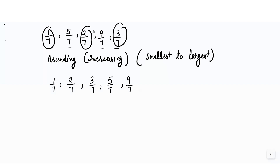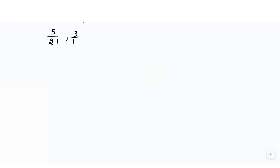We can also arrange them in descending order. Now let's take an example where the denominator is different: 5/21, 3/14, 1/7, and 9/14. Here you can see that the fractions have different denominators.